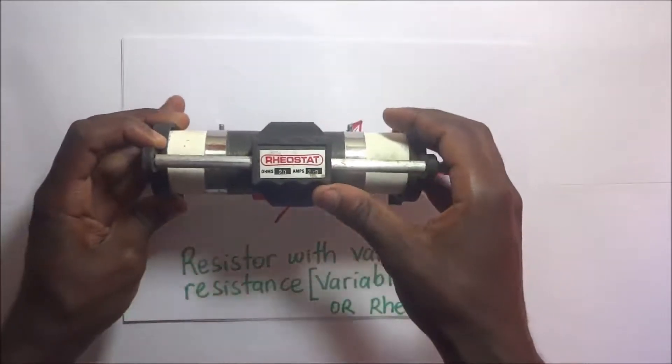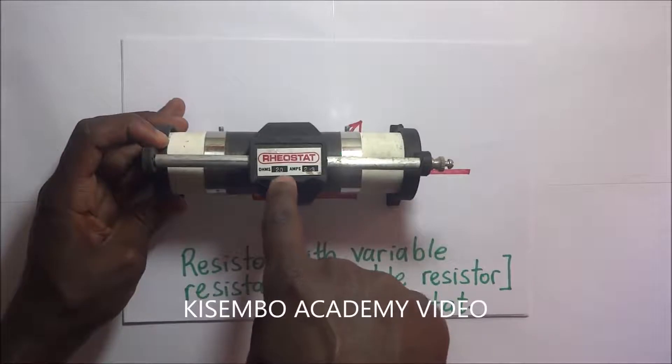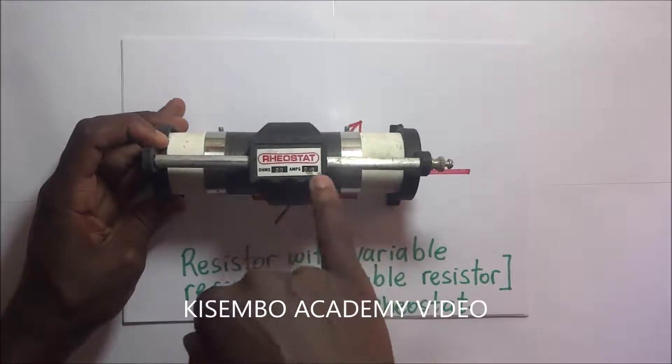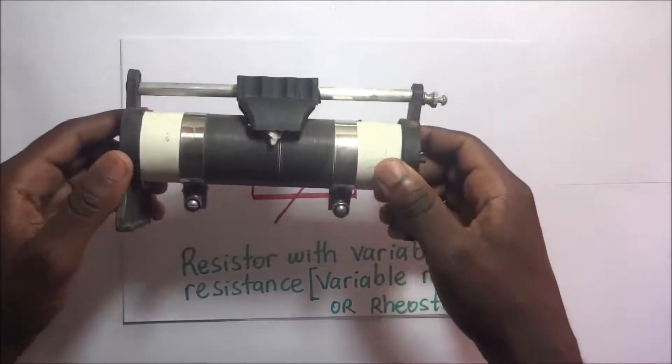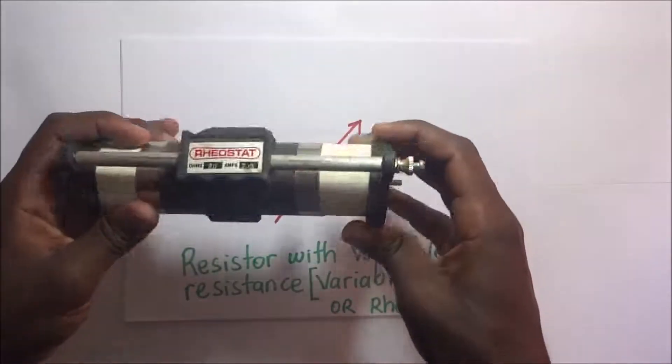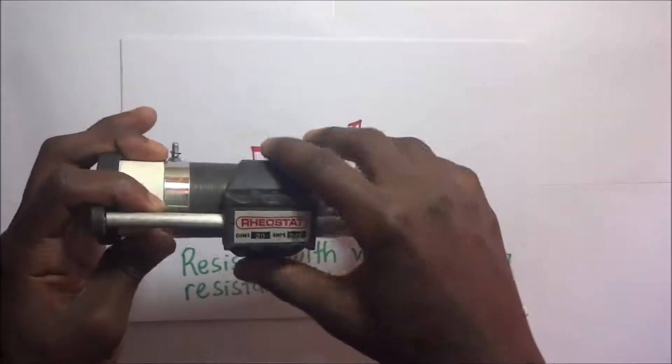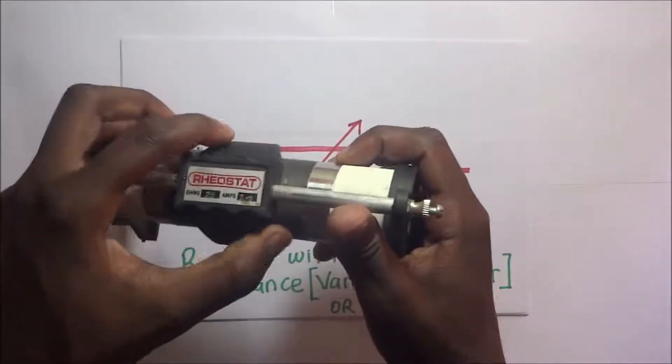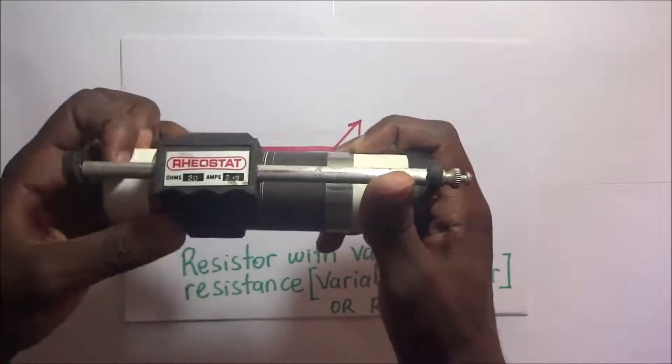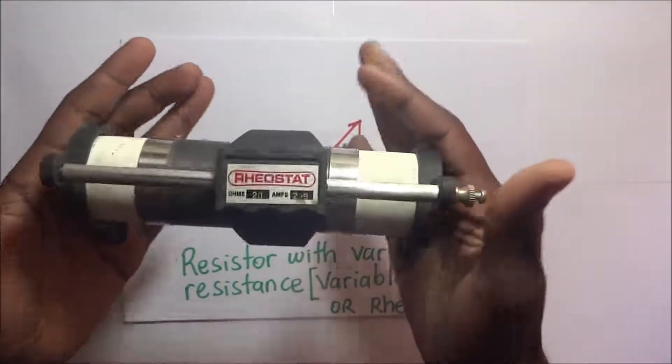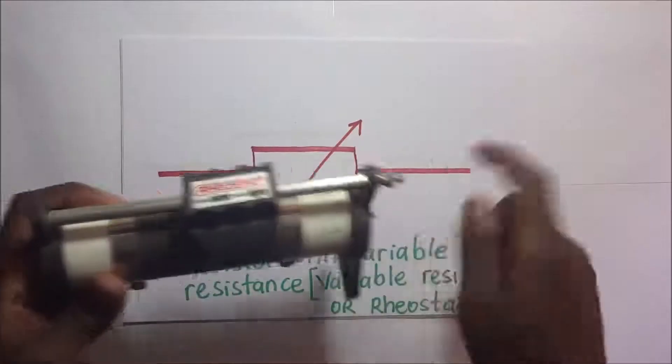It has a maximum resistance of 20 ohms and can allow 2.3 amperes. This is the rheostat. If we want to adjust the resistance of this thing, we simply have to slide this. As we are sliding it, we are trying to vary the resistance of this rheostat.